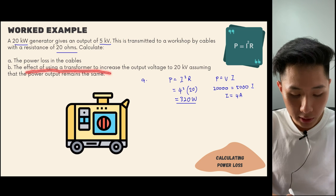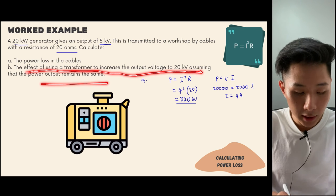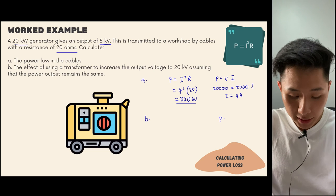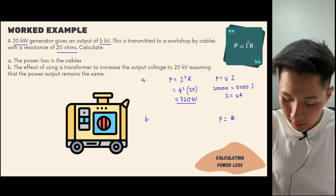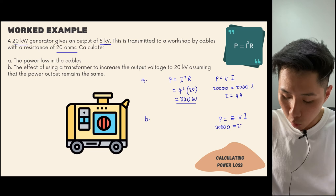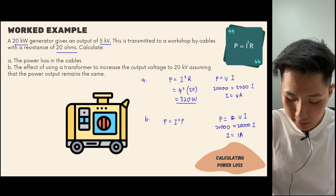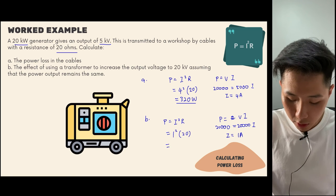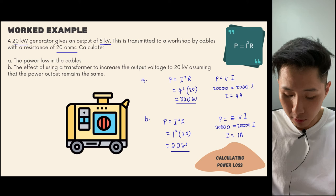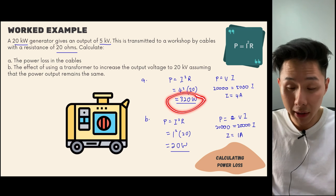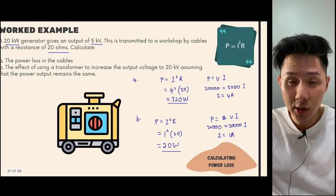Now let's look at the effect of using a transformer to increase the output voltage to 20,000 volts, assuming power output remains the same. Using P = VI: 20,000 = 20,000 × I, so I = 1 ampere. Power loss is now P = 1² × 20 = 20 watts. Comparing before and after: without the transformer the power loss was 320 watts; with the transformer it is only 20 watts. We have reduced power loss by 300 watts just by using a transformer.